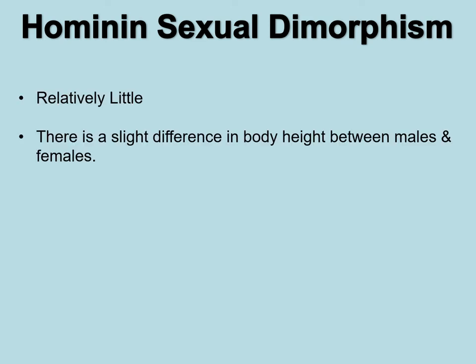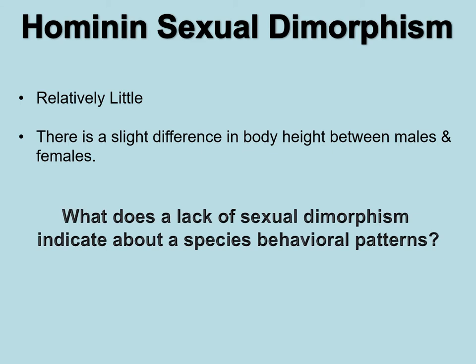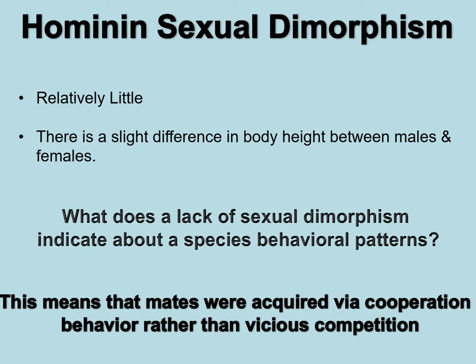Based on the evidence we have from Ardipithecuses and Australopithecines, we have male and female specimens of most of them, and we notice relatively little sexual dimorphism — only a slight difference in body height between males and females. A lack of sexual dimorphism indicates mates were acquired via cooperation rather than vicious competition. It means males cooperated to acquire mates and there was probably a higher degree of male parental investment in rearing young.